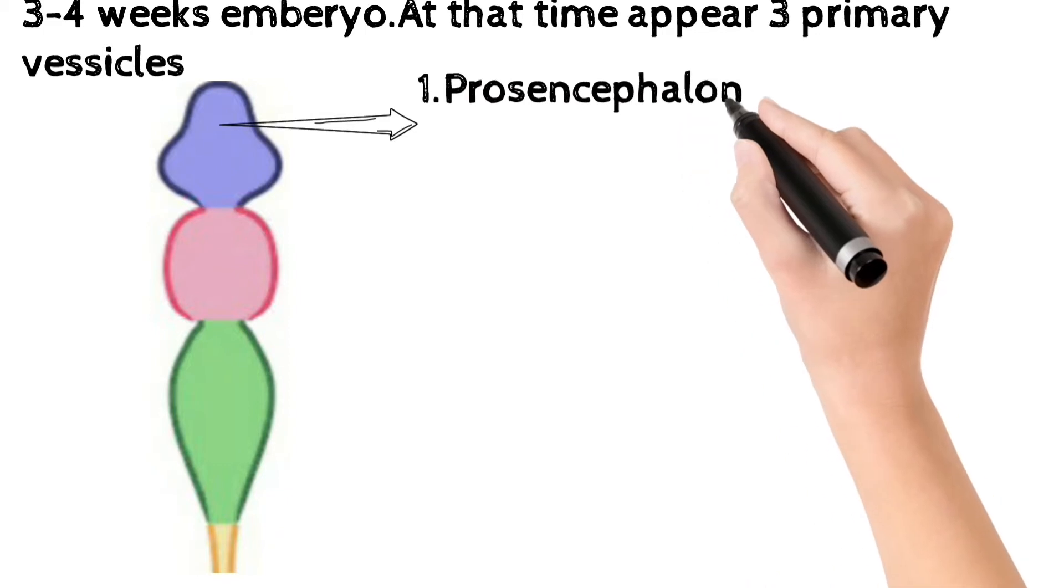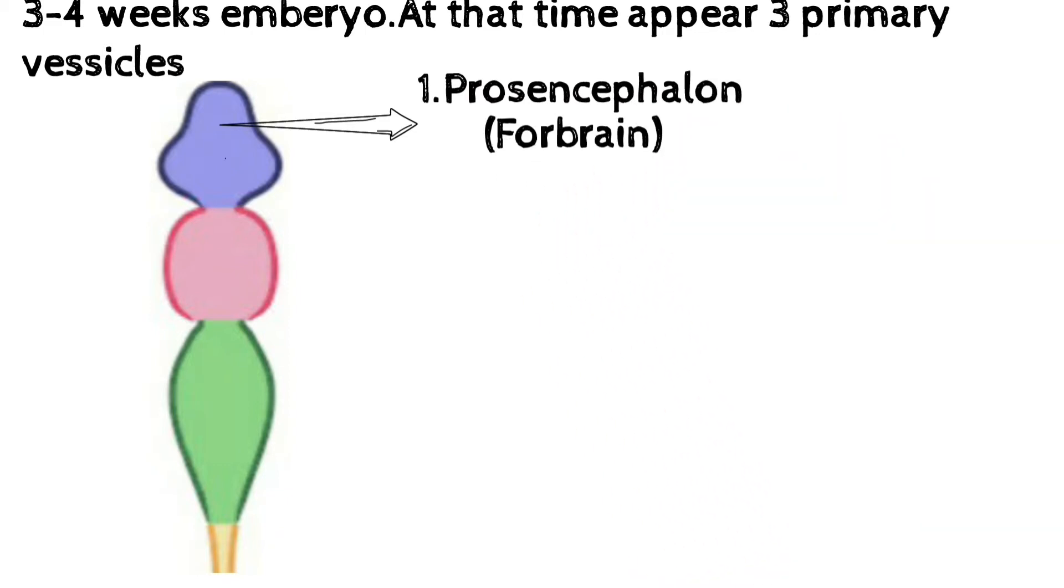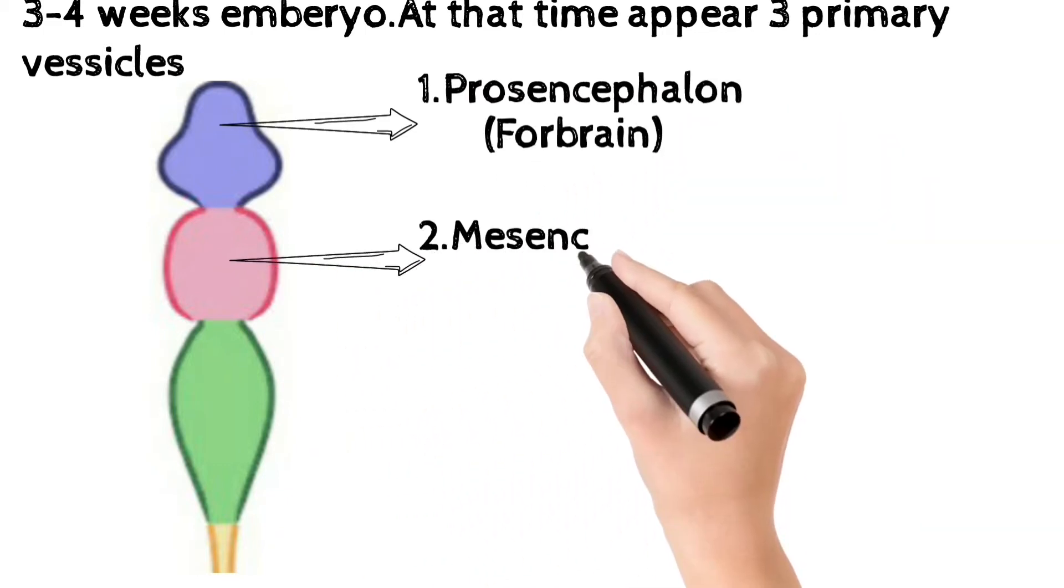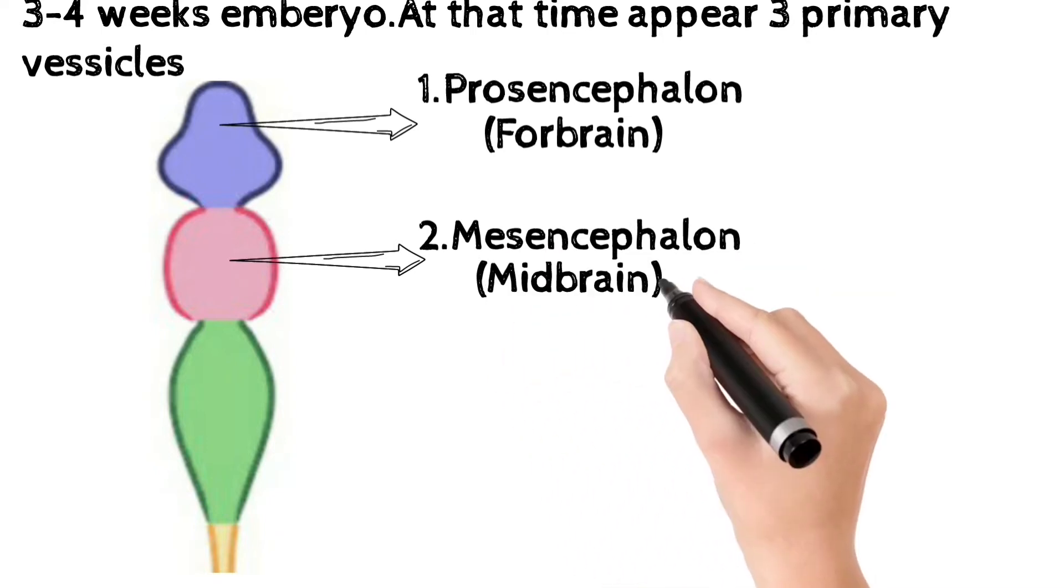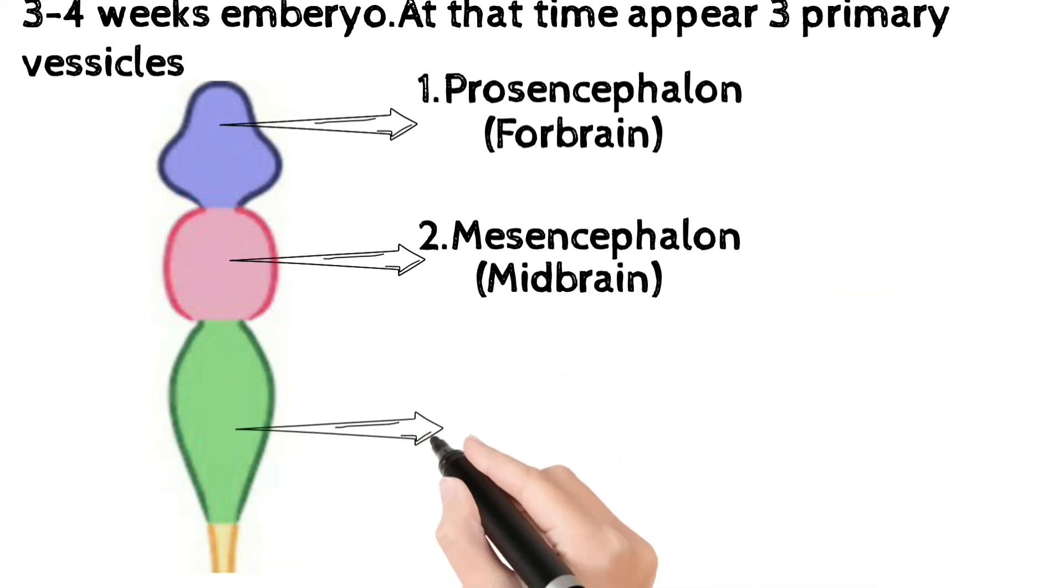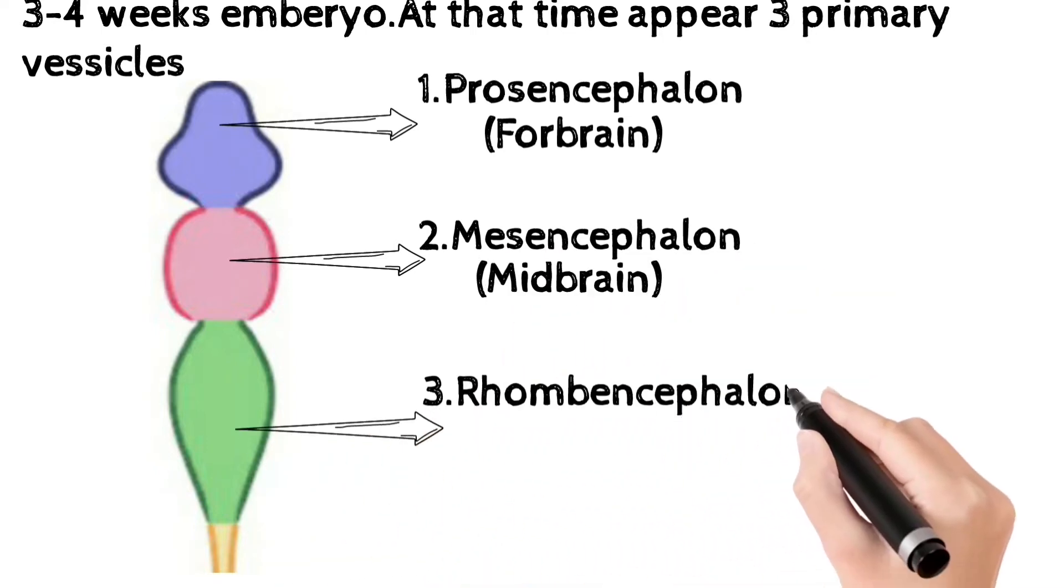First vesicle is prosencephalon. Second vesicle is mesencephalon. Third vesicle is rhombencephalon.